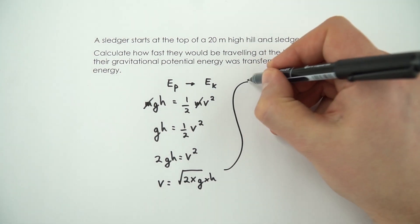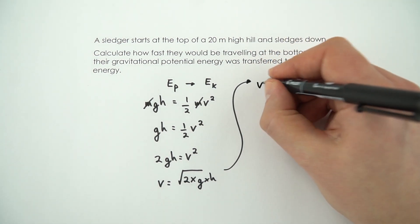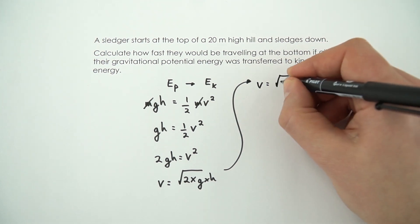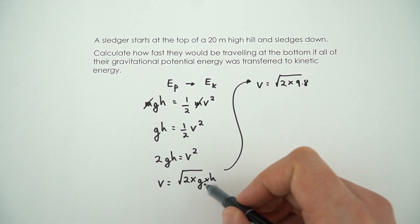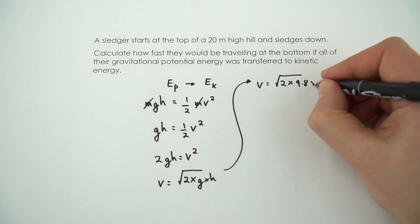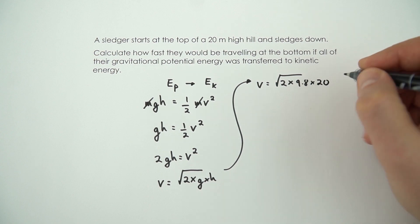So if we just go up here and put the numbers in, the final speed is going to be equal to the square root of 2 times 9.8. So that's our gravitational field strength in newtons per kilogram multiplied by the height, which is 20.